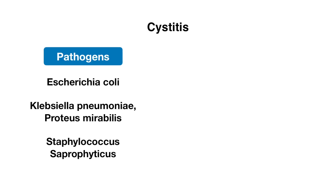Let's now go over what these pathogens are. With cystitis, the most common cause is E. coli by far. There are also other gram-negative organisms to keep in mind like Klebsiella pneumoniae or Proteus mirabilis, and then gram-positives like Staphylococcus saprophyticus.